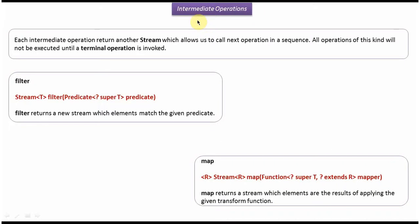In this video tutorial I will cover intermediate operations. Each intermediate operation returns another stream, which allows us to call the next operation in a sequence. Intermediate operations will not be executed until a terminal operation is invoked. Filter and map methods are intermediate operations — both methods return a new stream. We will see one example now.